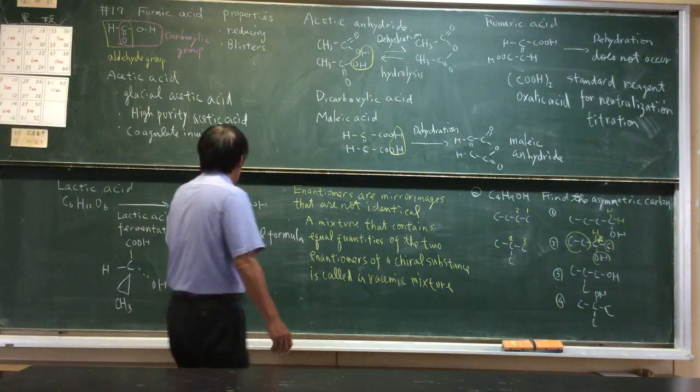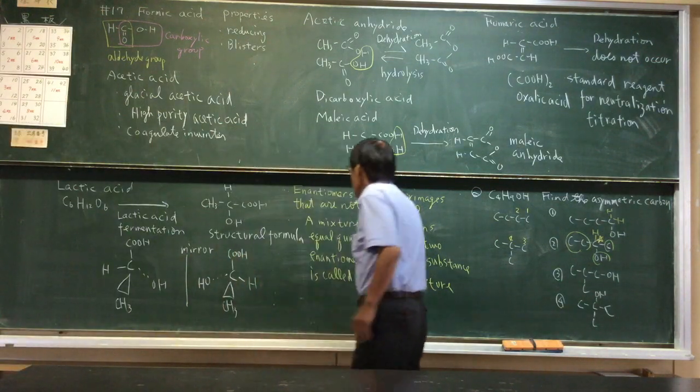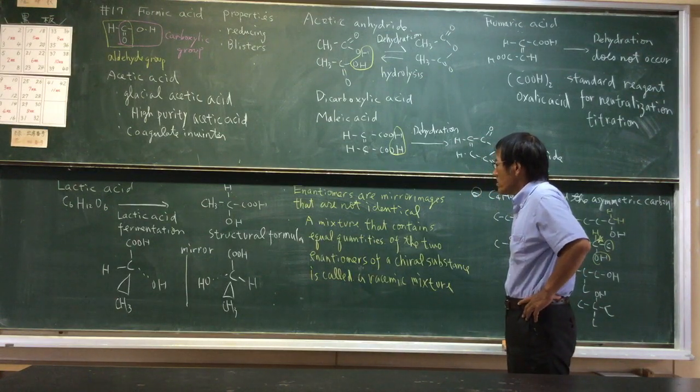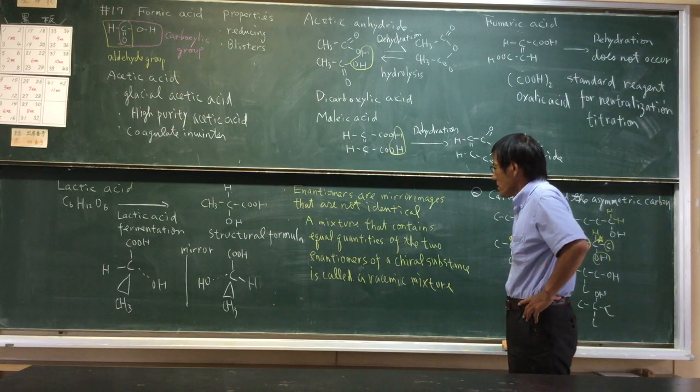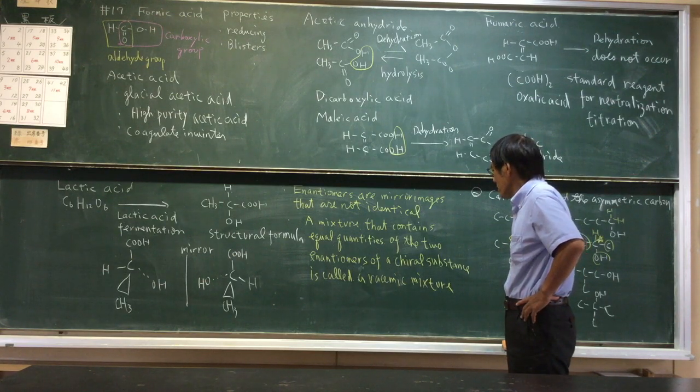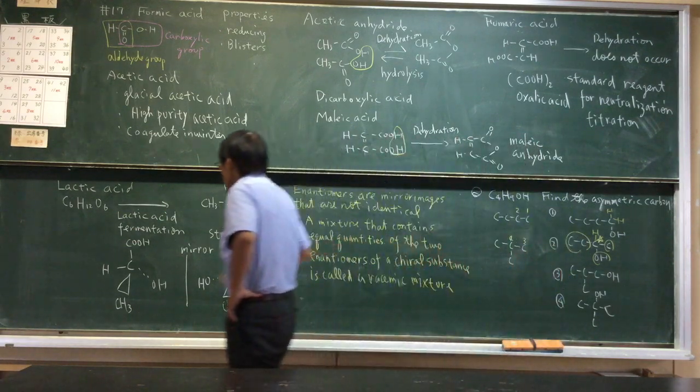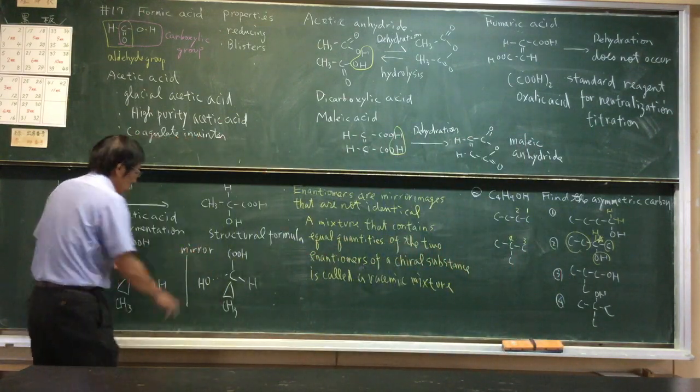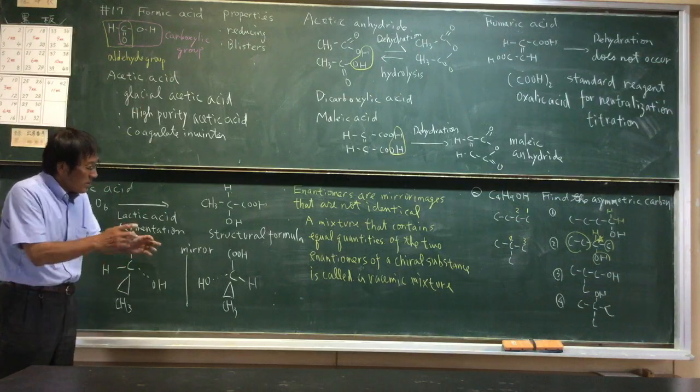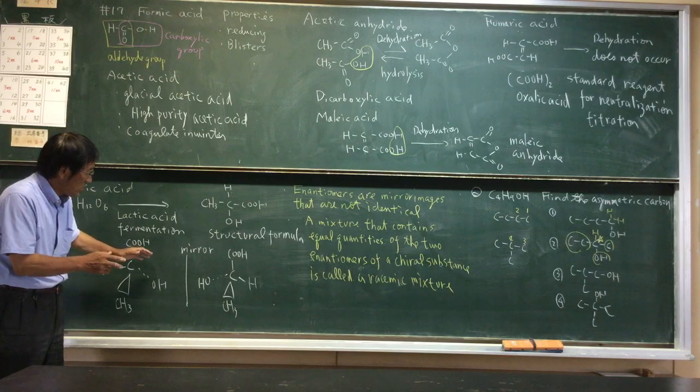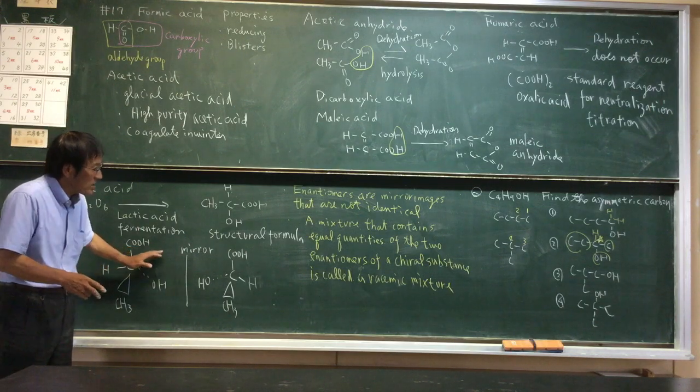A structural formula here. Acetic acid is called racemic mixture. D-form and L-form in equal ratio. This mixture is called racemic mixture.